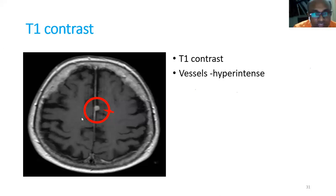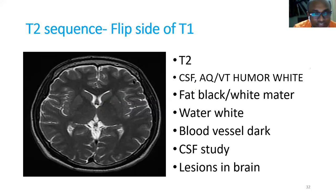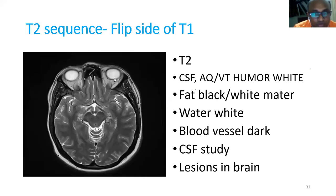In T1 contrast, you can see the contrast agent enhancing the vessels very well. T2 sequence is the flip side of T1. To identify T2: CSF is very white, and fat is black. White matter is dark and gray matter is relatively whiter. You can also identify T2 by looking at the eye bulb — the vitreous and aqueous humors — where CSF is white. Blood vessels look darker in T2, which is important to remember.